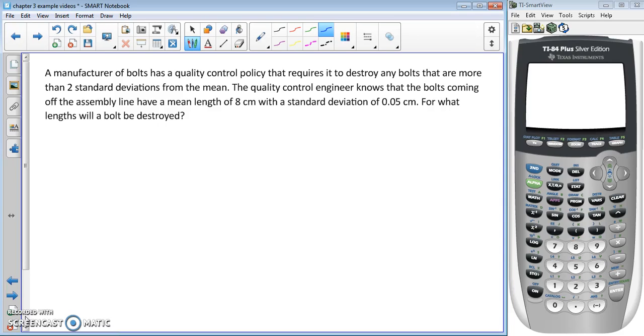We have a manufacturer of bolts that has a quality control policy that requires it to destroy any bolts that are more than two standard deviations from the mean. The quality control engineer knows the bolts coming off the assembly line have a mean length of eight centimeters with a standard deviation of 0.05 centimeter. For what lengths will a bolt be destroyed?